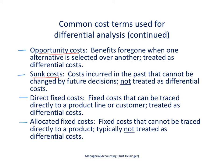Next we have direct fixed costs — these are the fixed costs that can be traced directly to a product line or a customer, and they should be treated as differential costs. These are costs that would go away if we were to eliminate the desktop computers. For example, maybe we have a person in charge of sales for that product line — we would no longer need that employee, and therefore that cost would be reduced. That is a differential cost.